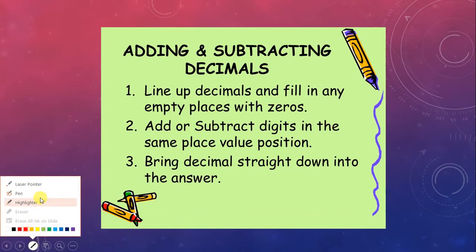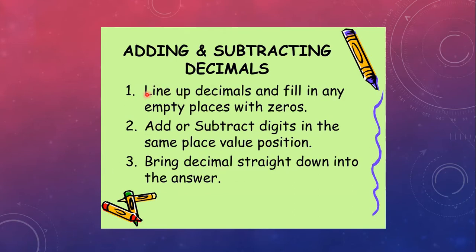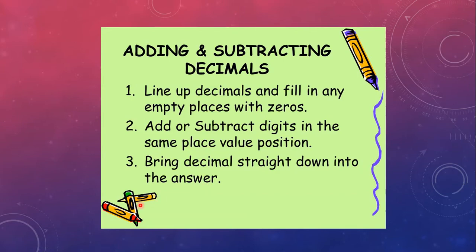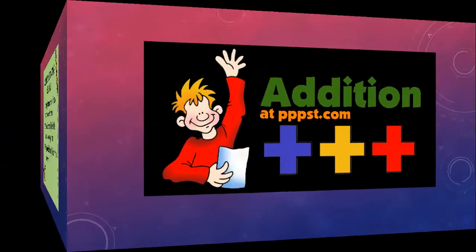There are certain rules you have to follow. The first rule is: line up the decimals and fill in any empty places with zeros. The second rule is: add or subtract digits in the same place value position. The third rule is: bring the decimal straight down into the answer.